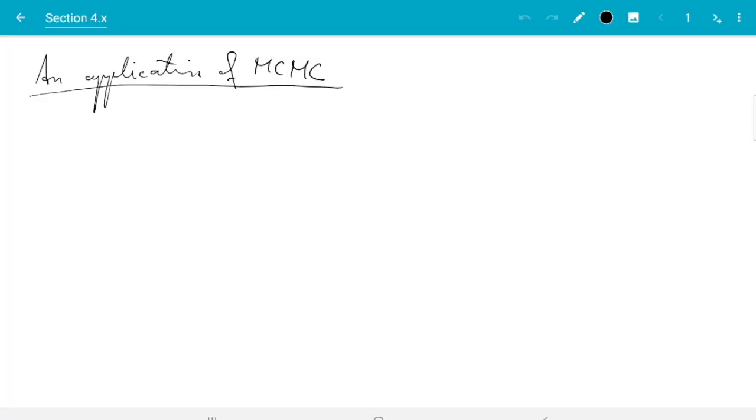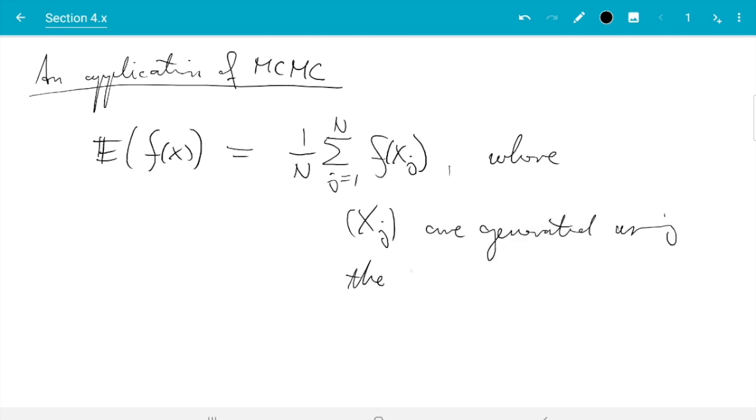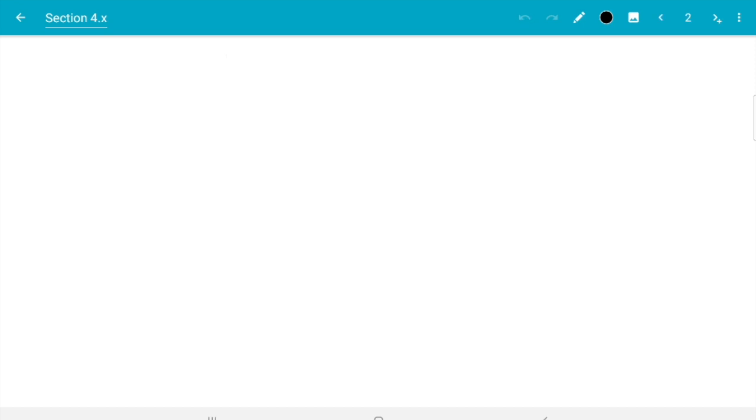I'll show you how we can use Markov chain Monte Carlo methods to get an estimate of the growth rates in the UK of that pandemic. Let me show you what I mean by that. We are going to use a Markov chain Monte Carlo method which means we can estimate expectations of the form of some function of some random variable using an estimator which looks like a standard Monte Carlo estimator, but where the samples x_j are generated using the Metropolis-Hastings algorithm. For the algorithm we need to pick a target density pi, and for that to work we need to choose pi to be the density of x.